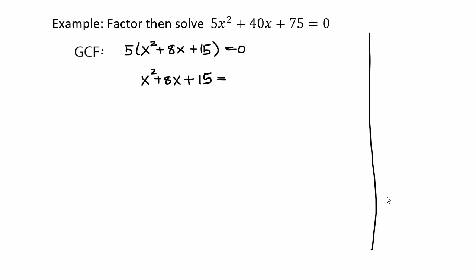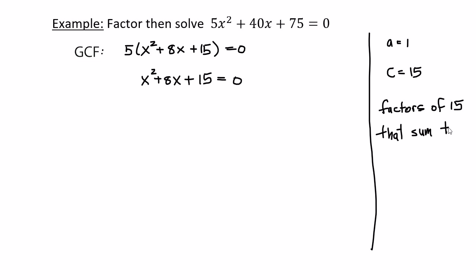Over here is my scratch work. In this case a is one — one of the easiest to solve — and c is 15. So I'm seeking factors of 15 that sum to b, which is now 8. That's probably 3 and 5. Factors of one are just one and one. So this is going to look like (x + a factor of 15)(x + a factor of 15) = 0.